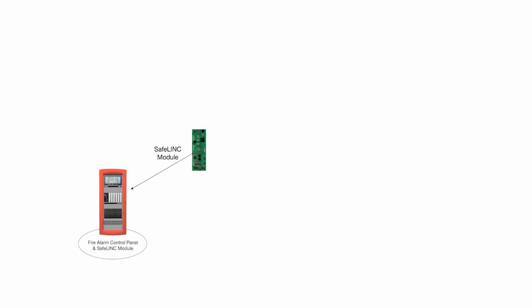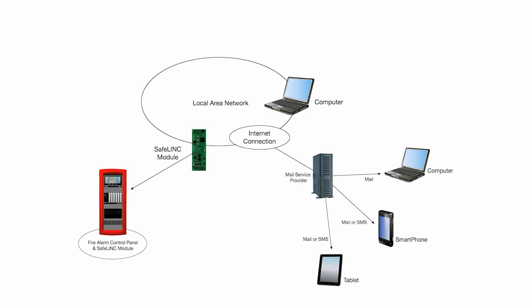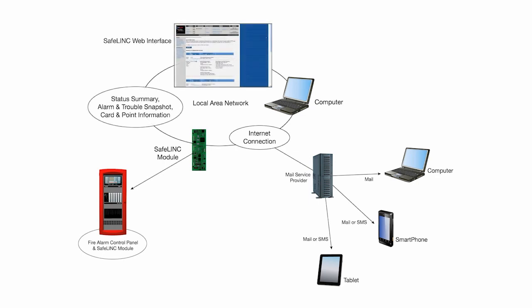Safelink is an optional card that can be installed into a Simplex 4100ES, 4010ES, or 4100U panel. The Safelink card provides an interface for the connection of the panel to the site local area network. Safelink uses the LAN to establish a secure connection to the internet. Using that connection, Safelink sends email and SMS format alarm and event notification messages to a user's computer, smartphone, or tablet.